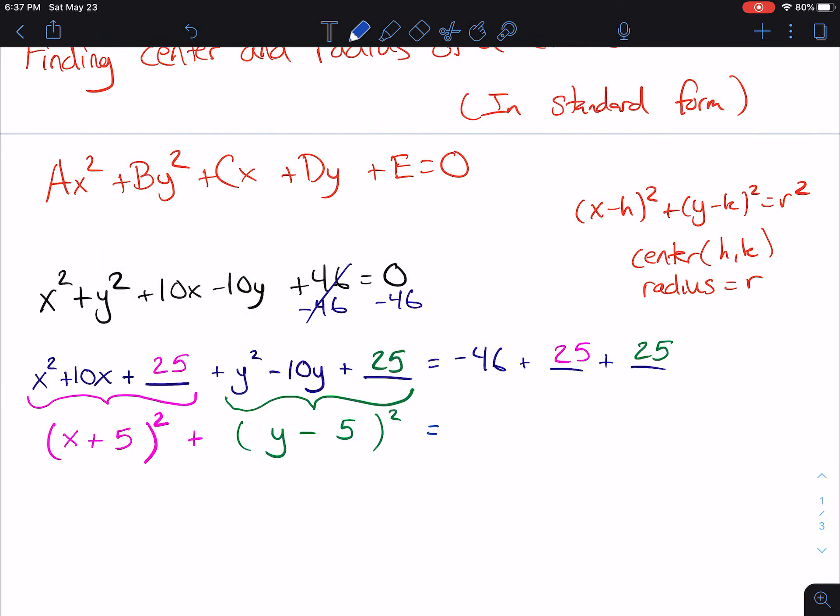So now my next step here is really to see what's going on. So what is negative 46 plus 25 plus 25? Well, negative 46 plus 25 plus 25, that's actually just the number 4. And so now what I have, and I'm just rewriting, I'm not doing anything else here, but I have x plus 5 squared. I have y minus 5 squared equals 4.